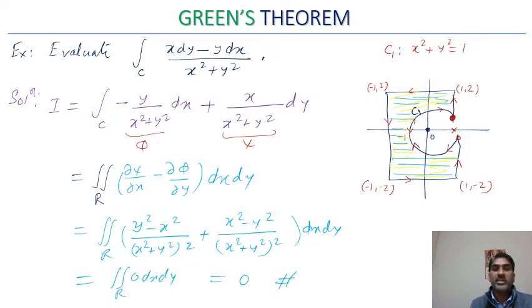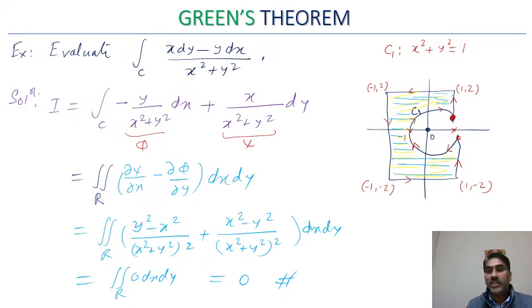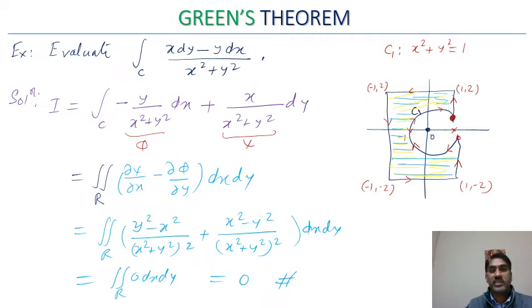This becomes a double integral of 0 dx dy, which equals 0. So using Green's theorem, we obtained the result very easily. Direct integration would require integrating over the circle and all four or five path segments separately to eventually get the same answer of 0, which would be significantly more tedious.